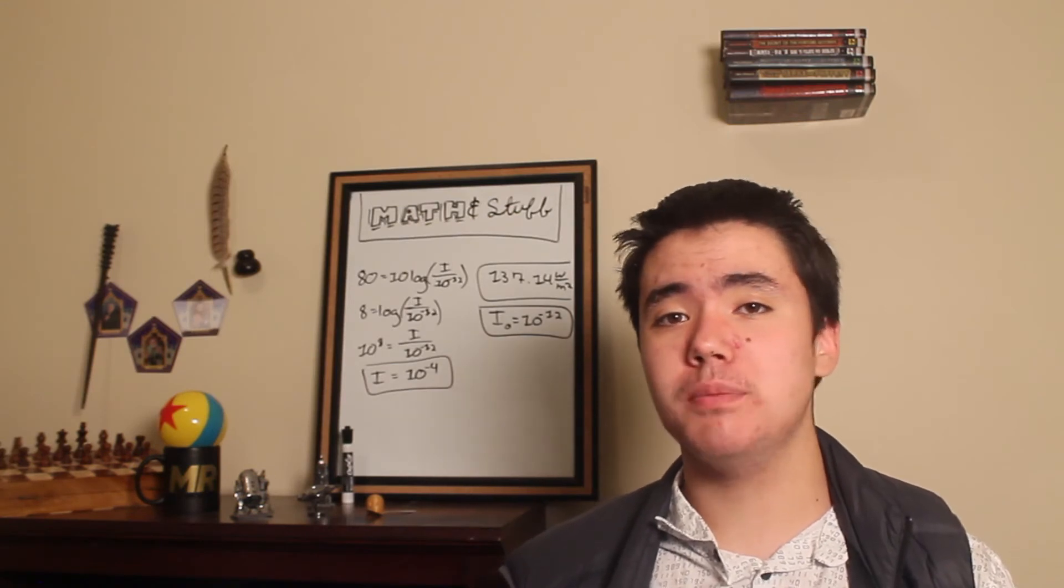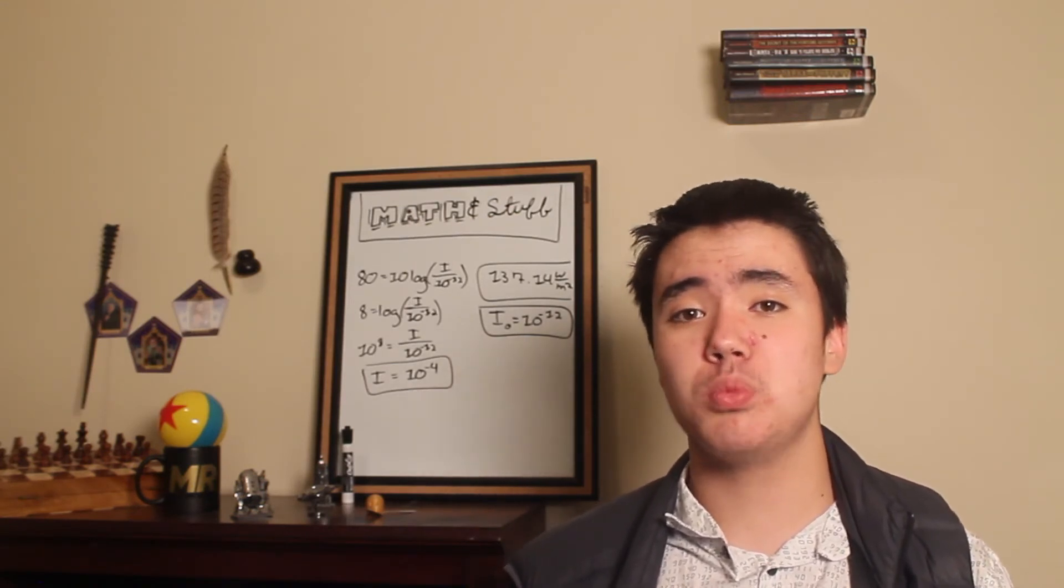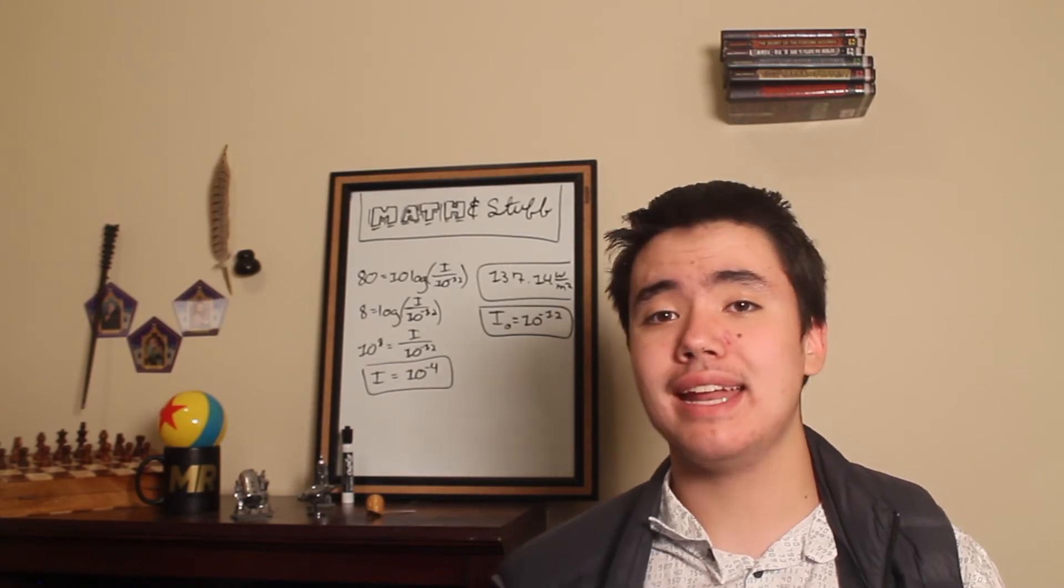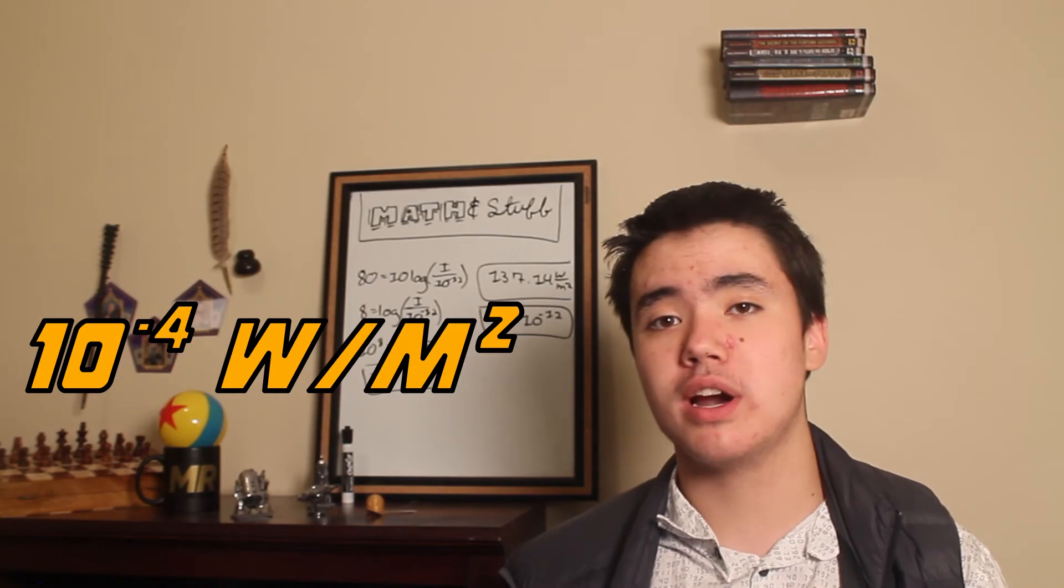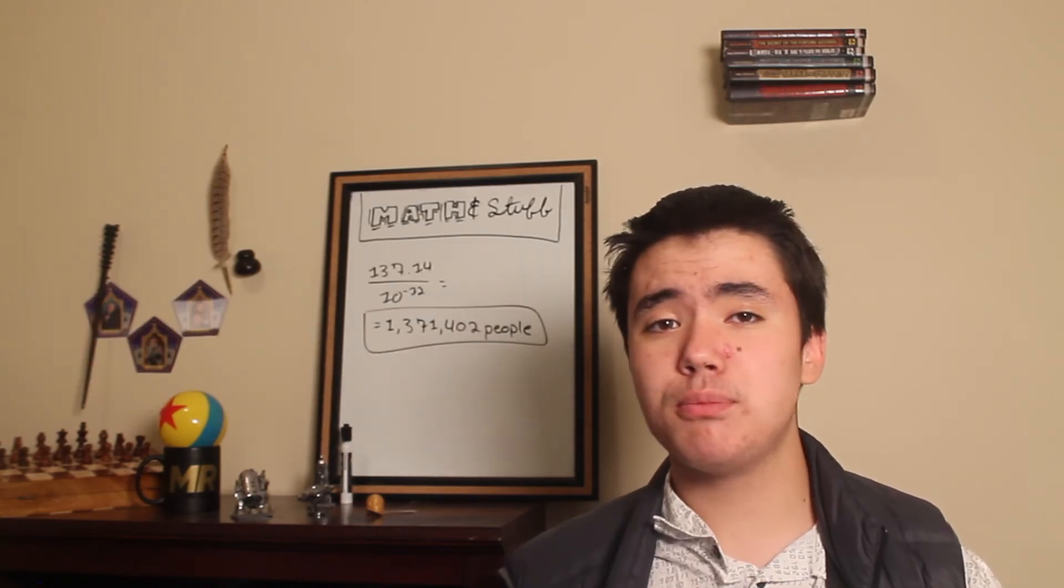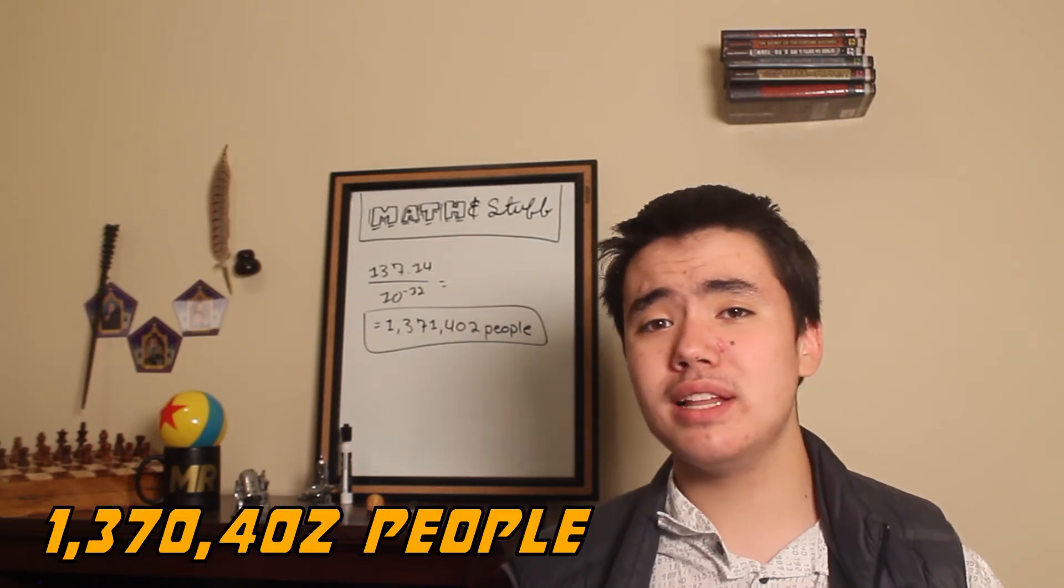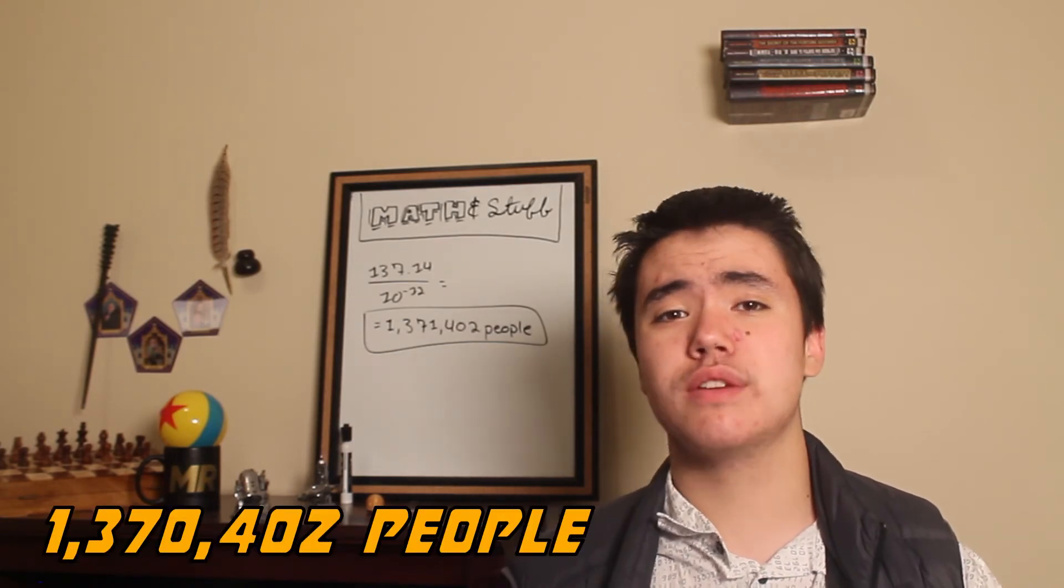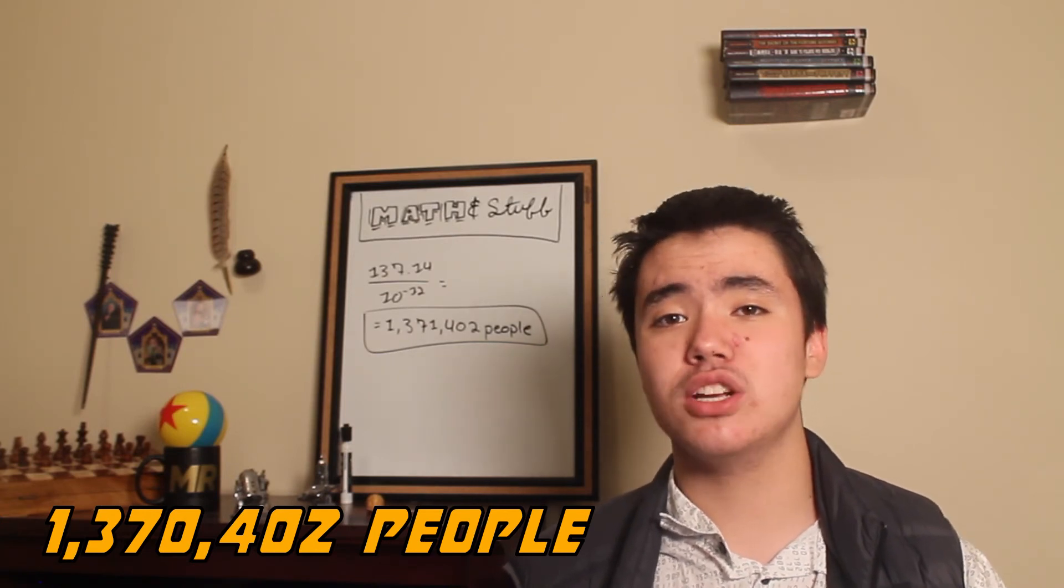As I said earlier, the average human yells at 80 decibels from a meter away when using 10 to the negative 12th as a reference intensity. So when we plug that in, we get that one person outputs 10 to the negative 4th watts per square meter. So when we divide 137.14 by 10 to the negative 4th, we get that we would need 1,371,402 people to yell at this turkey to heat it up to 80 degrees Celsius.